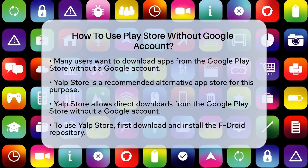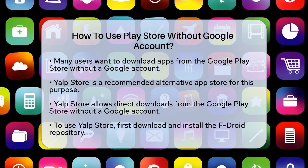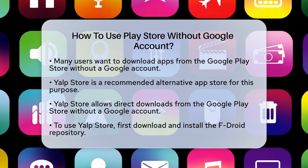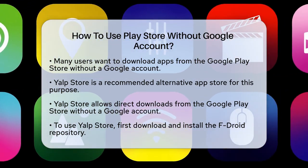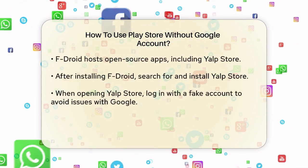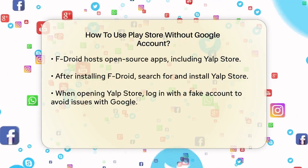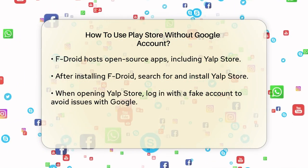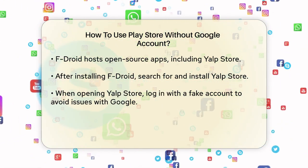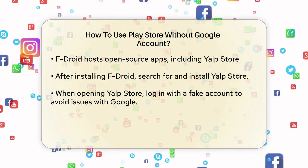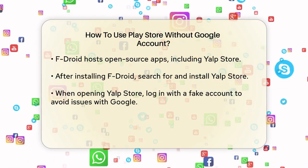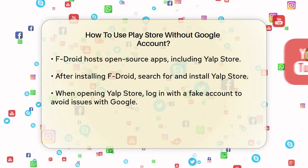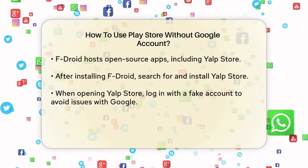Here's how you can do it. First, you need to download and install Yalp Store. You can get it from the F-Droid repository. F-Droid is another alternative app store that hosts open-source apps, including Yalp Store. Download the F-Droid APK from its official website, install it, and then open the F-Droid app. Let it update its repository, then search for Yalp Store within F-Droid. Download and install Yalp Store from there.